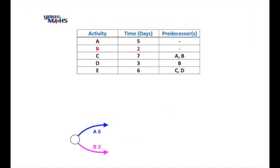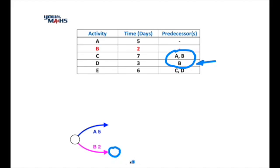We can identify the conflict in the predecessors column. Activity C is relying on A and B, but activity D is relying on B only. So we go with the lesser dependency: activity D is only relying on one predecessor. We place a node at the end of activity B and draw D coming off that — task D requiring three days. That fits the table: D requires B to be completed.